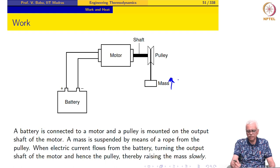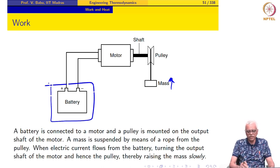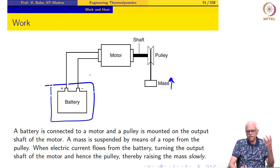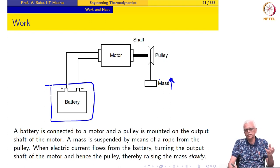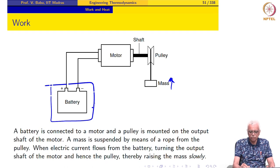The battery supplies current to the motor, the shaft spins, and the pulley winds the rope up so the mass moves upward. If I look at the battery alone as the system, its interaction with the surroundings is that electrical current flows out. This current, used through a motor to raise a mass, fits the definition: work is done by a system when its combined effect with the surroundings is the raising of a weight. So the work interaction for the battery system is greater than zero.